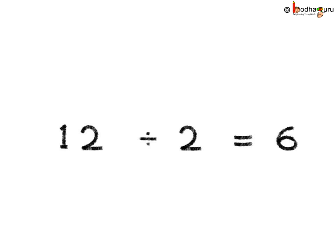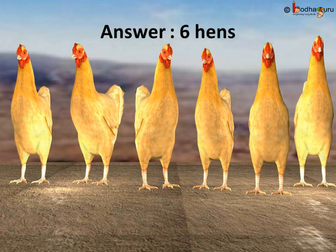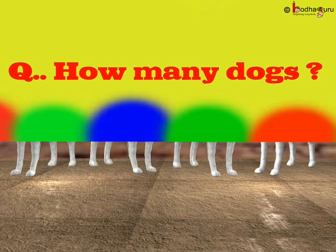So, there are 6 hens in total. Let us remove the board. See, 6 hens are there. Our answer is correct. Now, can you tell how many dogs are there? Let us count the legs.